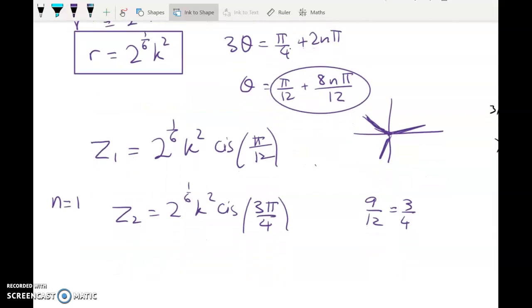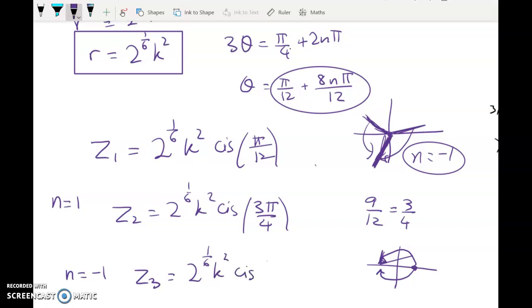Then the last one, I want to use a principal value, so I would prefer not to keep going and substitute 2. I'm instead going to substitute n equals negative 1, because that's going to generate a value that's between negative pi and pi. So remember, when we do complex numbers, we like to have our args come out between 0 round to pi, and then 0 back round to negative pi. So if I put in n equals negative 1, we get the third root, which is this. Negative 7 pi on 12.